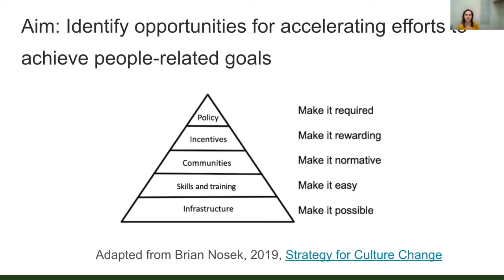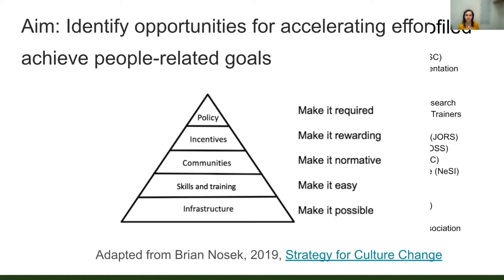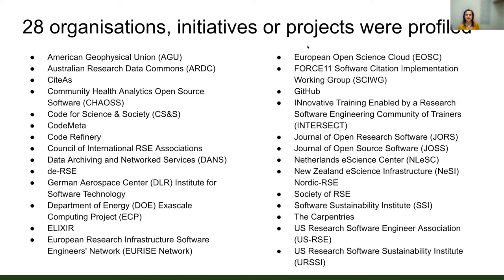We wanted to ask some questions for the People Roadmap with the aim of identifying opportunities for accelerating efforts to achieve people-related goals. We wanted to understand who was working on each of the five themes within the people area, how much they collaborate, what activities they do, who funds them, and where they see opportunities to do more work or work together, or where there are gaps or particular priorities. To do this, we invited 28 organisations to individual one-on-one interviews to profile them.